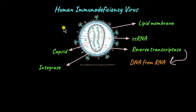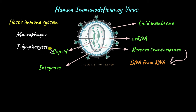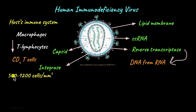Let's try to understand what HIV does to cells. When the virus infects the patient, it goes and attacks the host's immune system — specifically, it targets the macrophages and T lymphocytes. These two are very important cells in the immune system, involved in fighting off a lot of infections. The virus infects these cells, specifically a type of T lymphocyte known as CD4 T cells. The normal range of CD4 T cells is about 500 to 1200 cells per millimeter cube. But with HIV infection, the count of T lymphocytes drastically decreases, and that decrease is what categorizes AIDS.